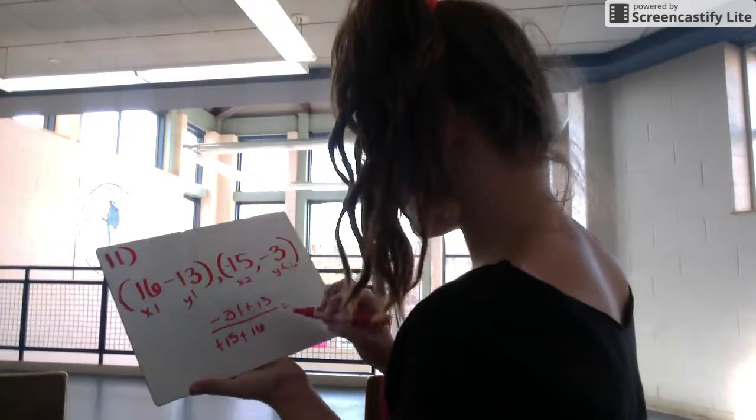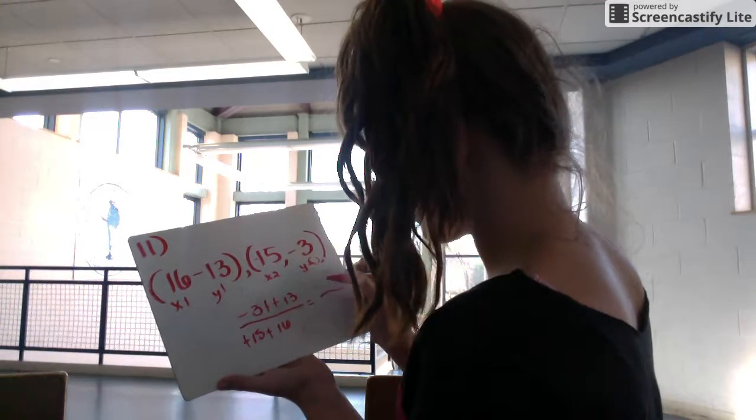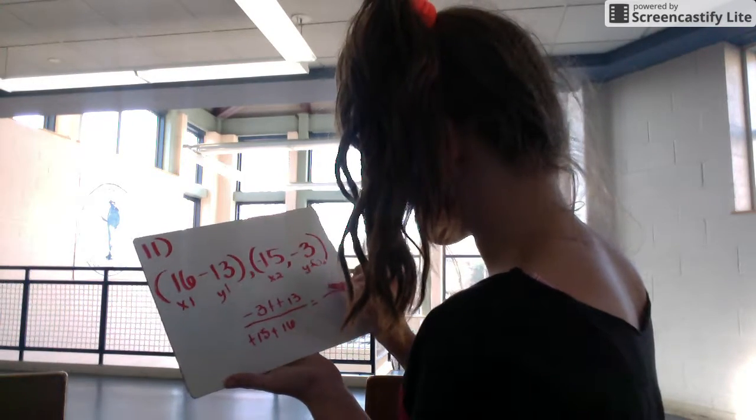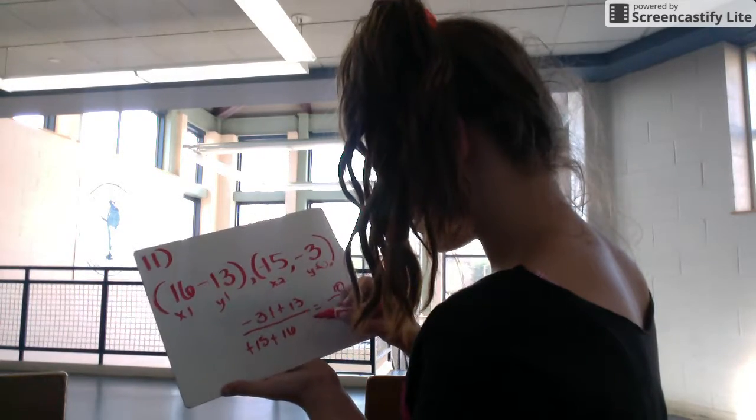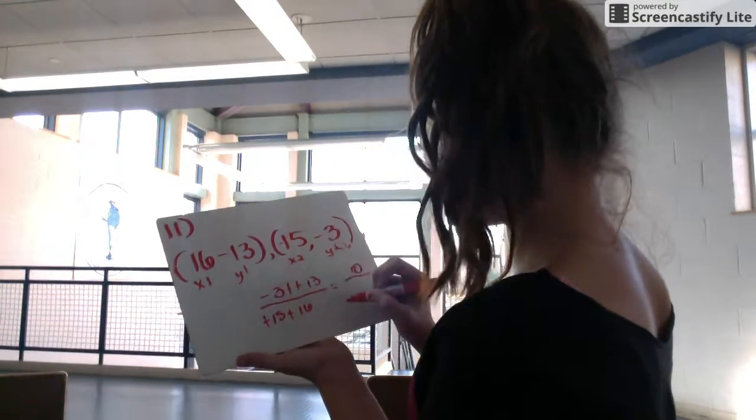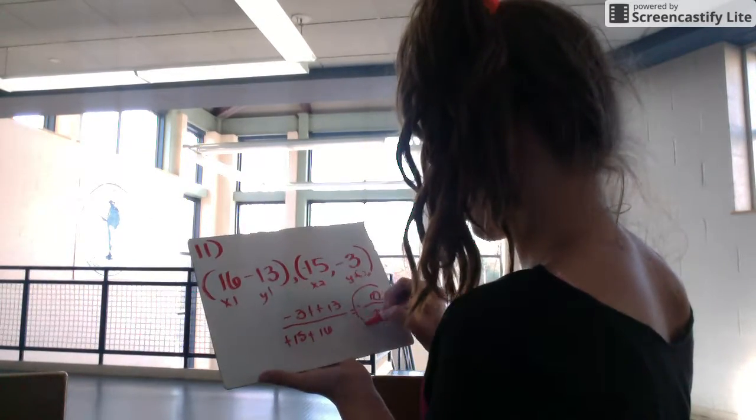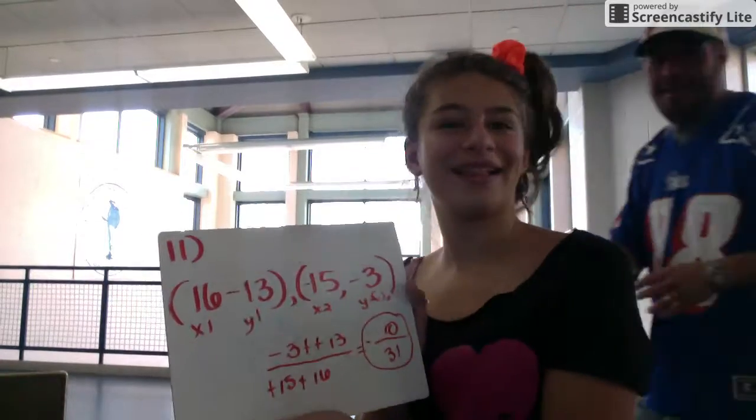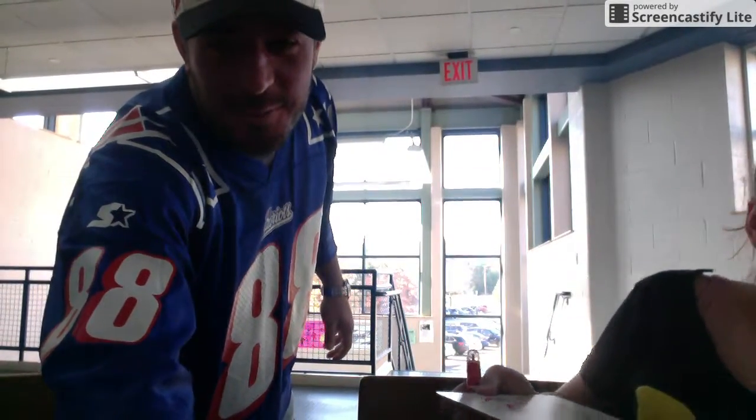And then it's going to equal 13 plus negative 3, which will be 10. And then it's going to be 15 plus 16, which is 31, and it's going to be negative. And that's how you find slope from two coordinates.